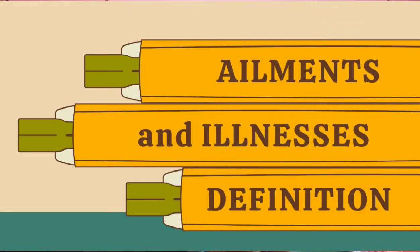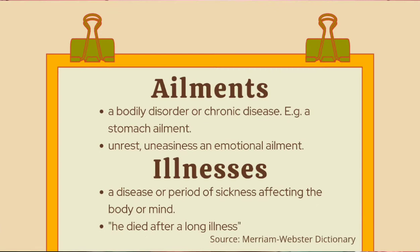First, let us determine the definition of ailment. An ailment is a bodily disorder or chronic disease. Examples include stomach ailment and heart ailment. It is also defined as unrest, uneasiness, or an emotional ailment.